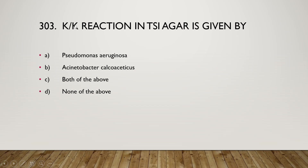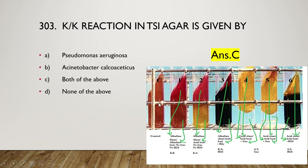The next question: K/K reaction in TSI agar is given by Pseudomonas aeruginosa, Acinetobacter calcoaceticus, both of the above, or none of the above. The right answer is option C — both of the above. TSI agar means Triple Sugar Iron, where three sugars are present: sucrose, glucose, and lactose. Depending on the digestion of these sugars by microorganisms, we can differentiate them.